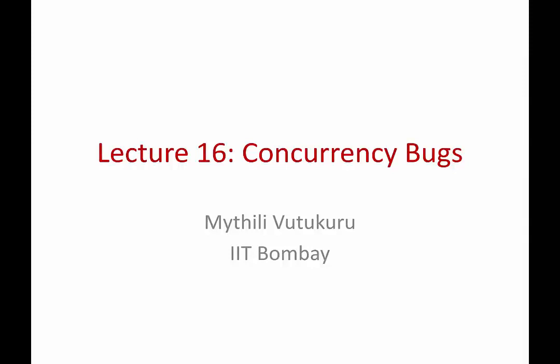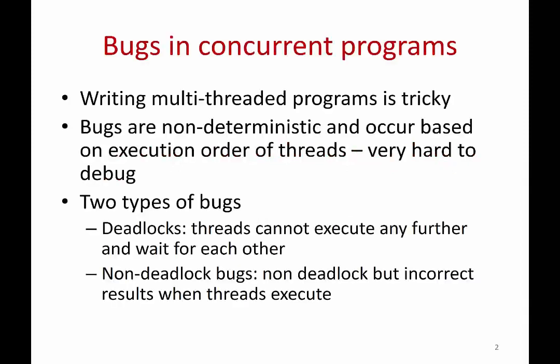In this lecture we are going to study the common types of bugs that can occur when you write multi-threaded programs and how you can avoid them. Writing multi-threaded programs is tricky because all sorts of race conditions can happen, and these bugs are non-deterministic — they occur based on the order of execution of the threads. Sometimes the bug may occur, sometimes it may not, making it very hard to reproduce and debug.